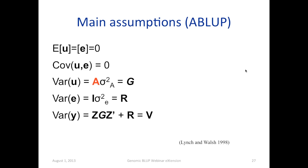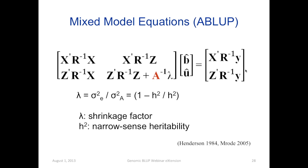To sum up, the variance of the observation is the product of Z, G, and Z-prime, plus residual variance. We then use mixed model equations to solve and get the predictions for individuals. The solutions for the fixed effects would be vector v, and solutions for the random effects would be mu-hat. Lambda is a ratio of residual variance and additive genetic variance, which is basically the inverse of the heritability.